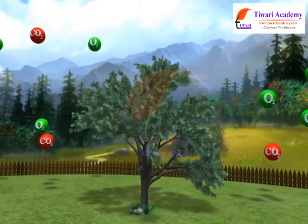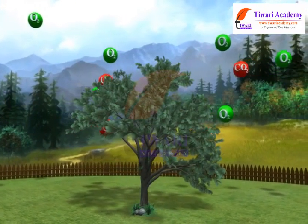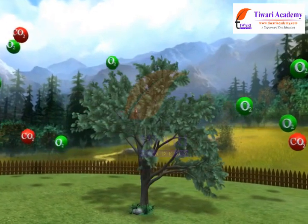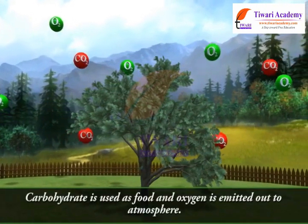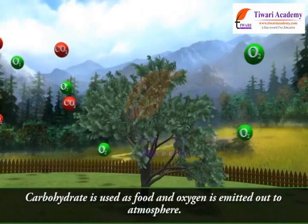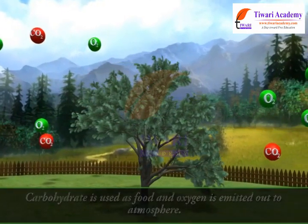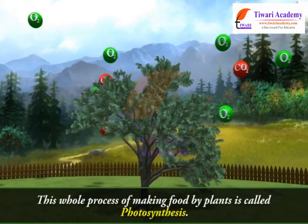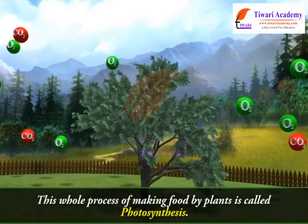Chlorophyll, a green pigment found in green leaves, absorbs sunlight and provides energy. Chlorophyll absorbs sunlight, and together with carbon dioxide and water, converts them into carbohydrate and oxygen. The carbohydrate is used as food and the oxygen is emitted out to the atmosphere. This whole process of making food by plants is called photosynthesis.